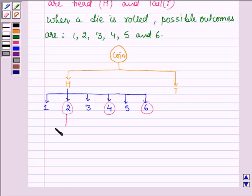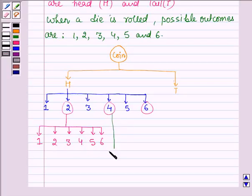So when 2 appears, then a die is thrown again. That is we have 1, 2, 3, 4, 5 and 6. Also when 4 appears, again a die is thrown. So here again, we have 6 possible outcomes of this die.